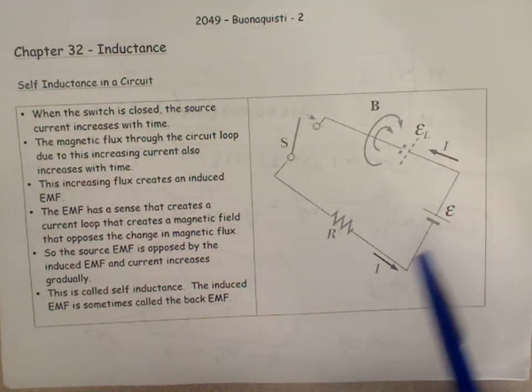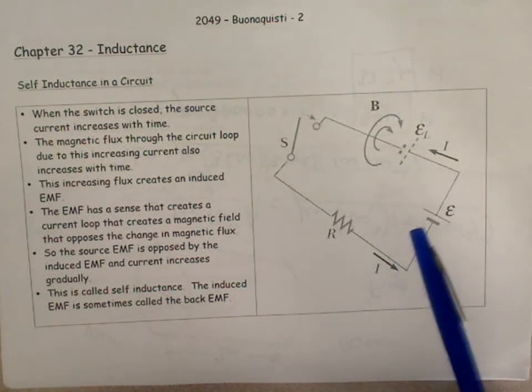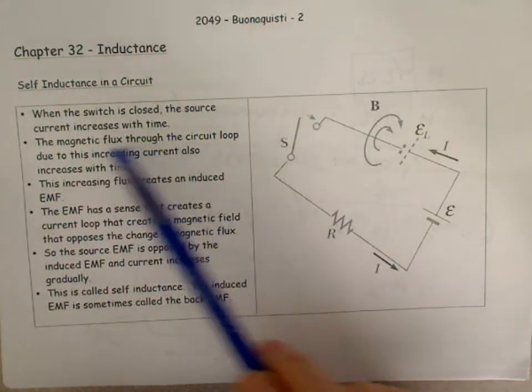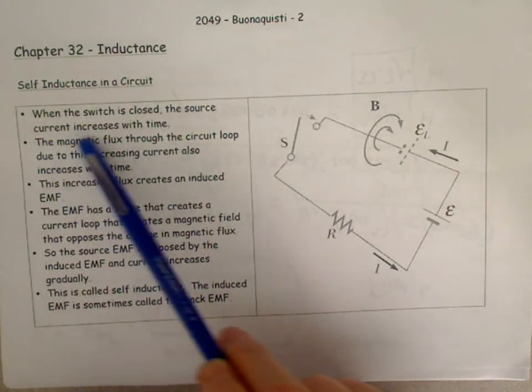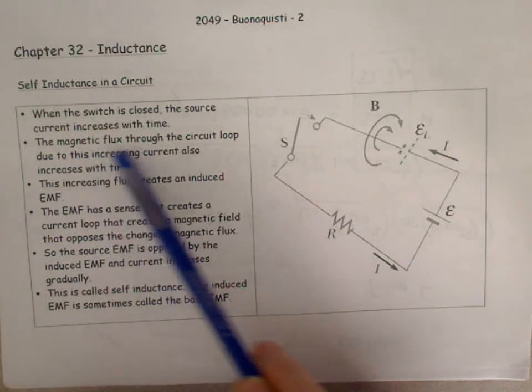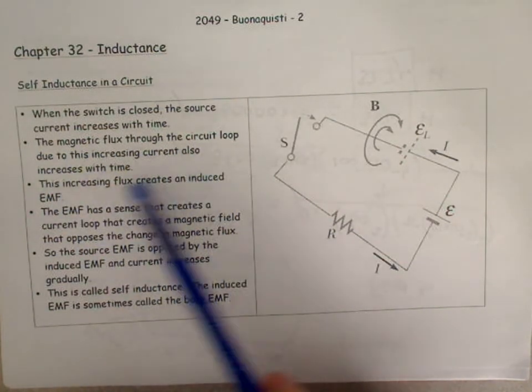The circuit tries to turn itself off. When the switch is closed, the source current increases with time. The magnetic flux through the circuit loop, due to this increasing current, also increases with time.